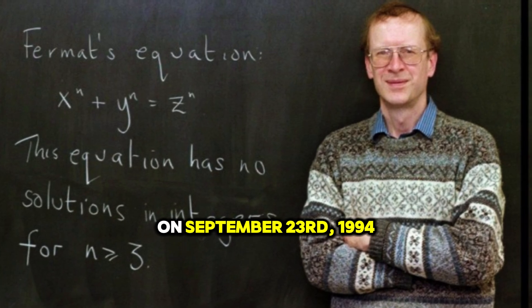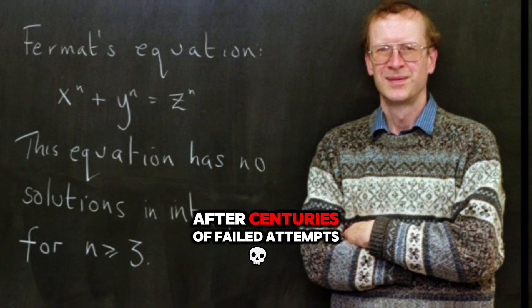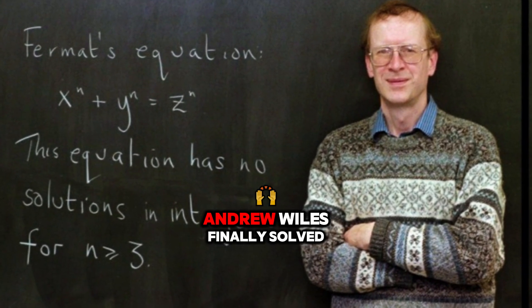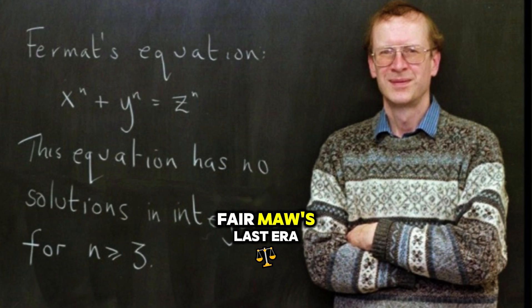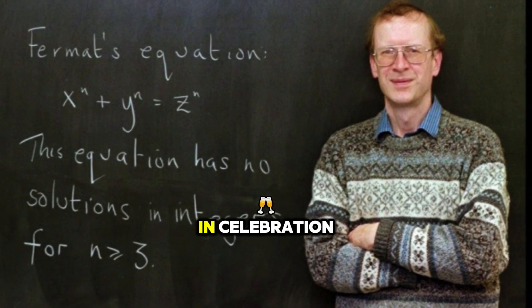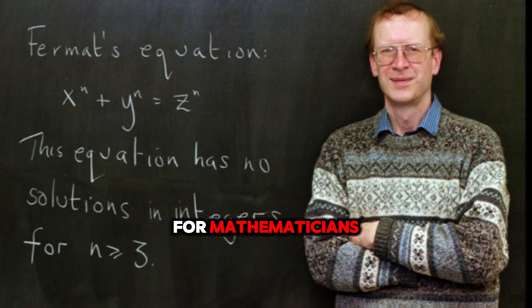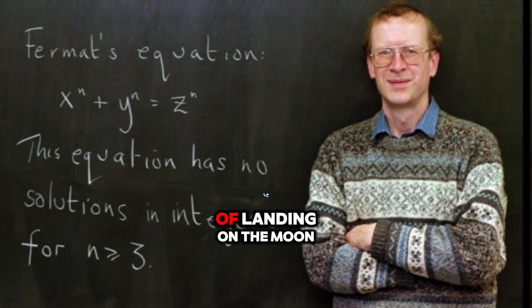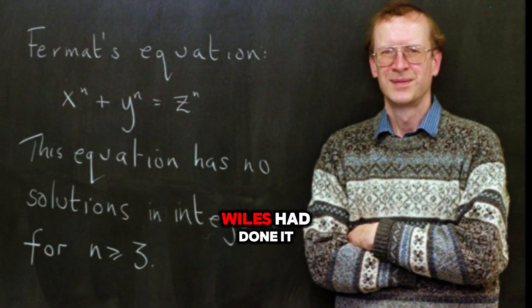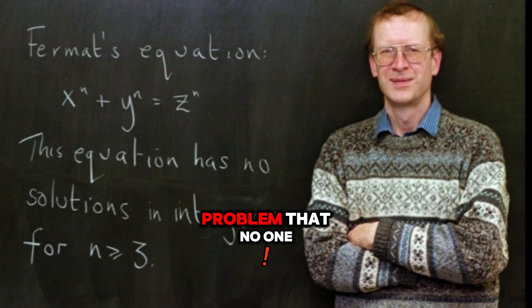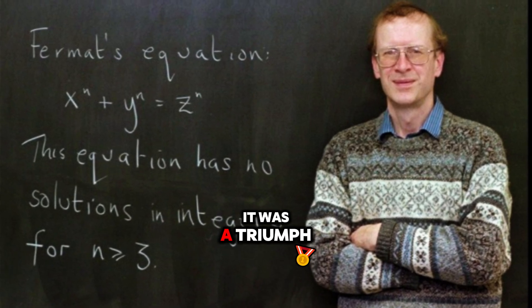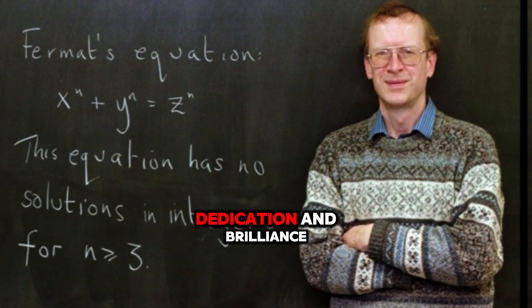On September 23, 1994, after centuries of failed attempts, Andrew Wiles finally solved Fermat's Last Theorem. The math world erupted in celebration. For mathematicians, this was the equivalent of landing on the moon. Wiles had done it. He had solved the problem that no one else could. It was a triumph of perseverance, dedication, and brilliance.